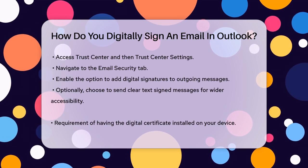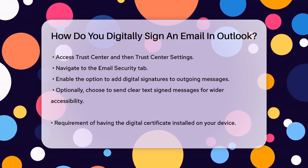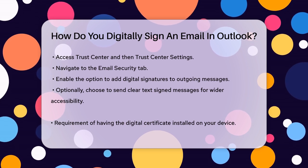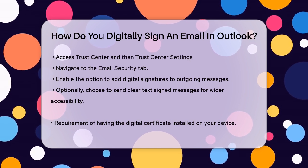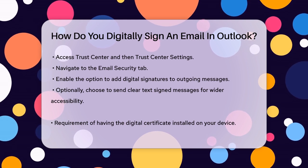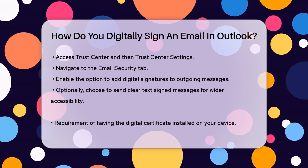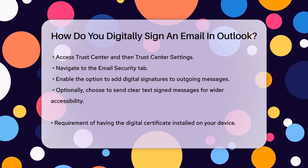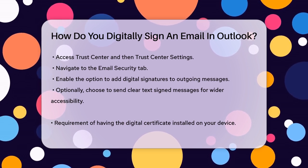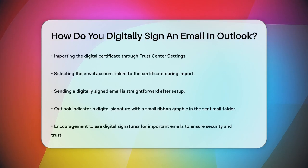You can also choose to send clear text signed messages if you want recipients without S/MIME security to be able to read your emails. To ensure your digital signature is applied correctly, you need to have the digital certificate installed on your computer or device. You can import this certificate through the Trust Center settings by selecting the email account associated with the certificate and choosing the correct signing certificate from your computer's trust store.